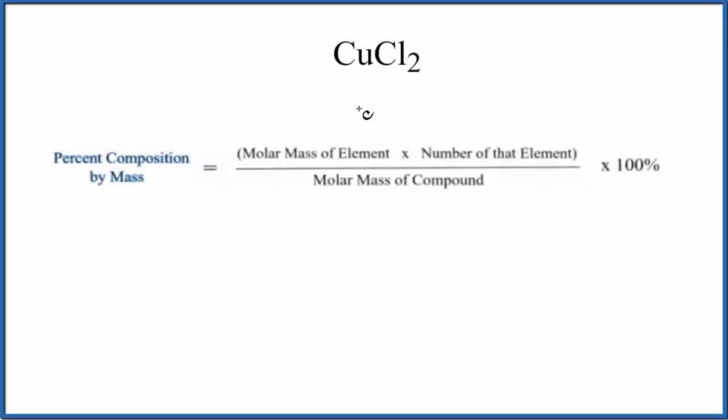In this video, we'll find the percent composition by mass for each element here in copper 2 chloride, CuCl2. We'll use this equation here, and the first thing we need to do is find the molar mass for the compound, for the CuCl2.